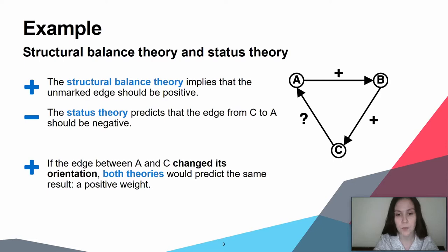On the other hand, if the edge between A and C changes its orientation and becomes an edge from A to C, both theories would predict the same result. These observations stress the importance of considering the orientation of the edges.